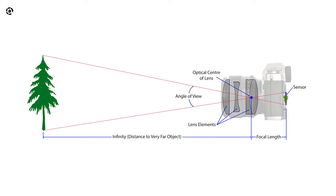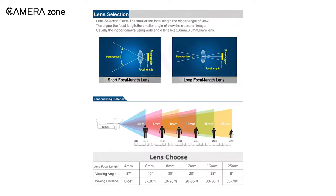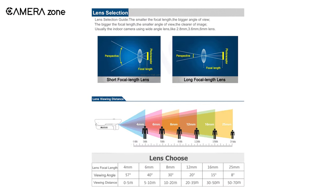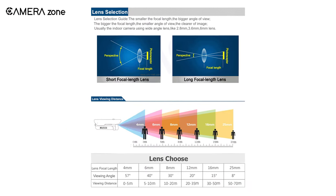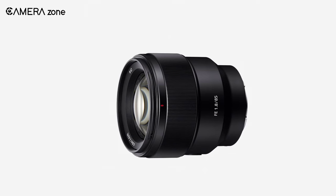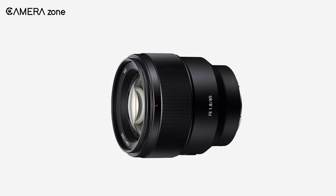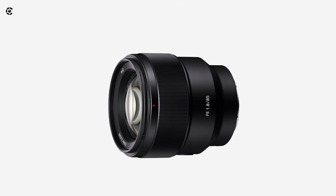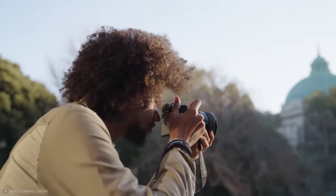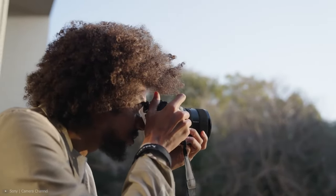Focal length is the cornerstone of every lens, and the main difference between a prime lens and a zoom lens lies in their ability to change the focal length. Prime lenses have only one focal length and you can't change it, meaning zooming in or out is not possible with a prime lens.